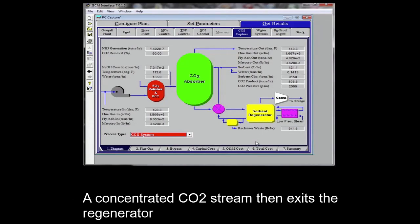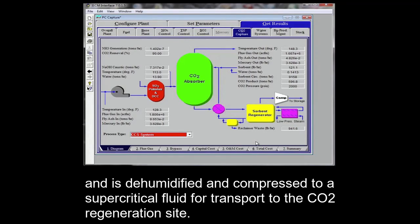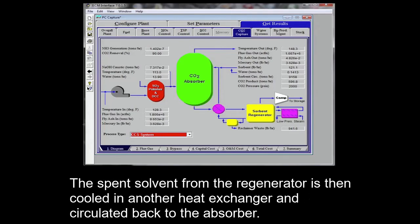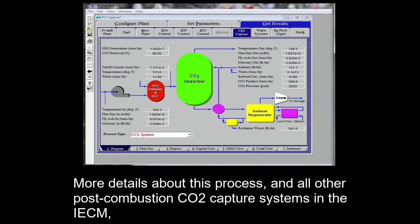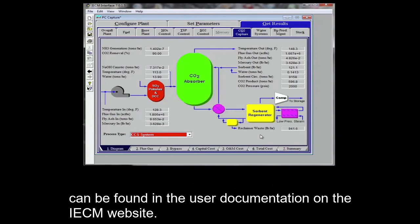A concentrated CO2 stream then exits the regenerator and is dehumidified and compressed to a supercritical fluid for transport to the CO2 storage site. The spent solvent from the regenerator is then cooled in another heat exchanger and circulated back to the absorber. More details about this process and all other post-combustion CO2 capture systems in the IECM can be found in the user documentation on the IECM website.